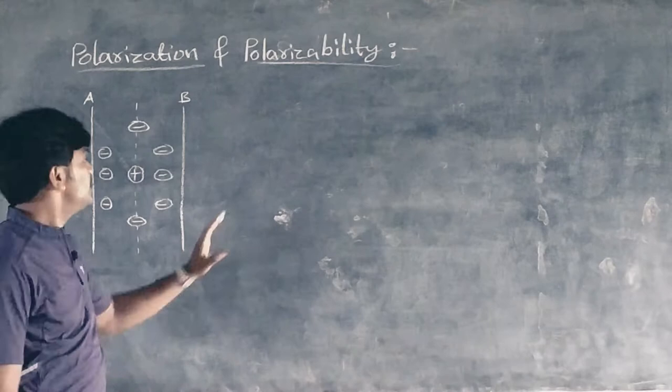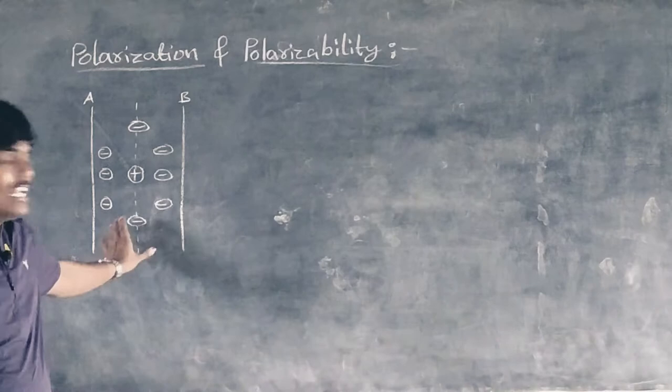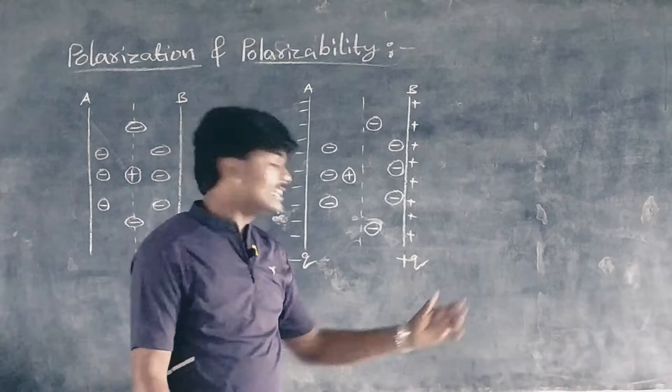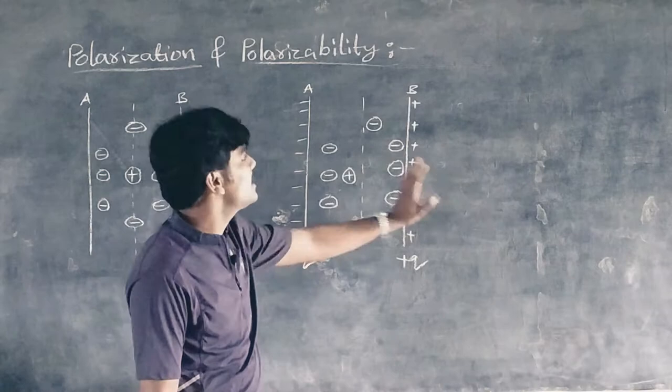This figure represents the electronic structure of an atom when the two metal plates are not charged. When the two plates are charged, an electrostatic field is established between the metal plates, as shown in the figure.